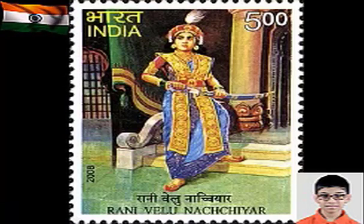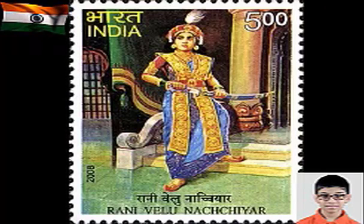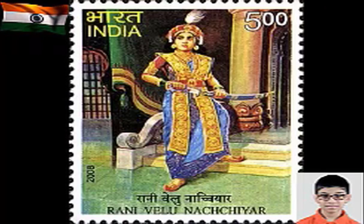Rani Velu Nachiyar was a queen of the Indian state of Shivaganga from 1760 to 1790. She was the first queen to fight against the British in India. When Rani Velu Nachiyar found the place where the British stored their ammunition, she arranged a suicide attack. She was one of the few rulers who regained her kingdom and ruled it for over 10 more years.